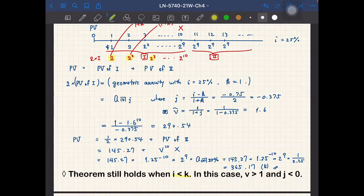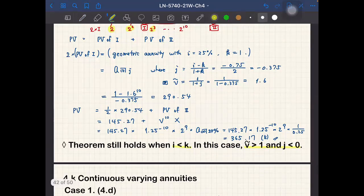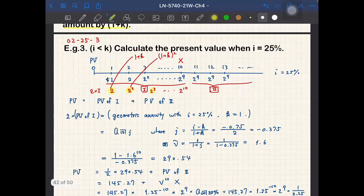But V tilde becomes larger than 1, and J becomes smaller than 0, so it looks a little strange. And the second point is that we divided the cash flow into two parts: one is the geometric progression and the other is the usual perpetuity.